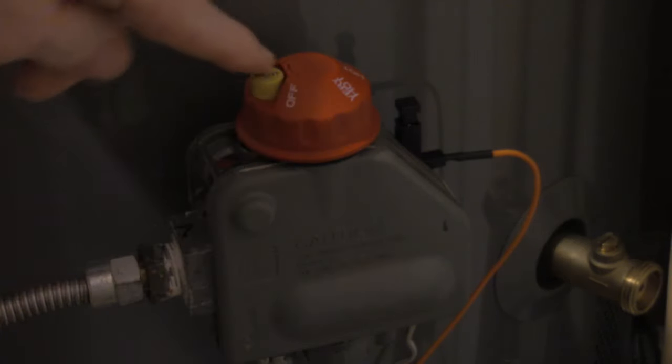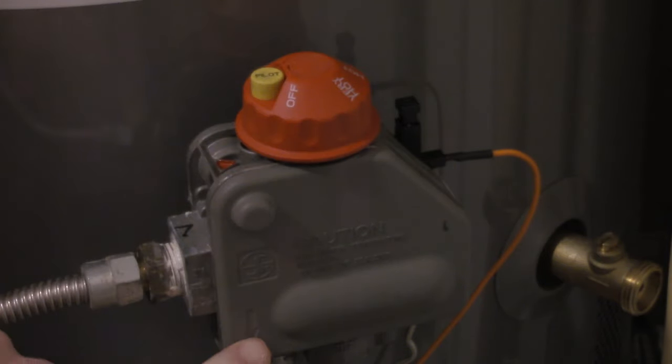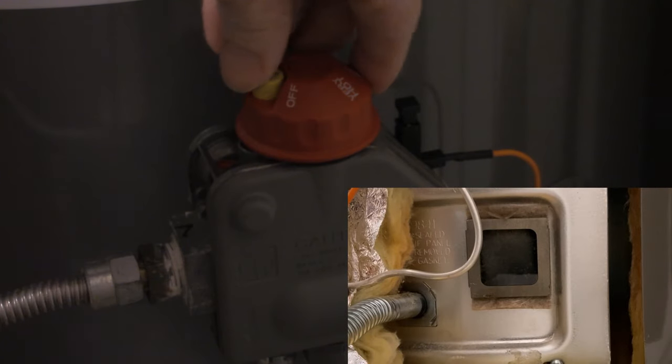And what happens is when you line this up and you push that pilot button down, it opens the gas solenoid in here, which allows gas to flow down to your burner and to your pilot light.